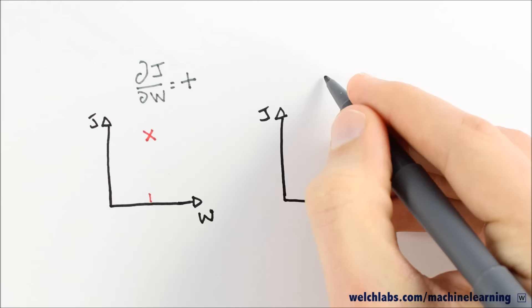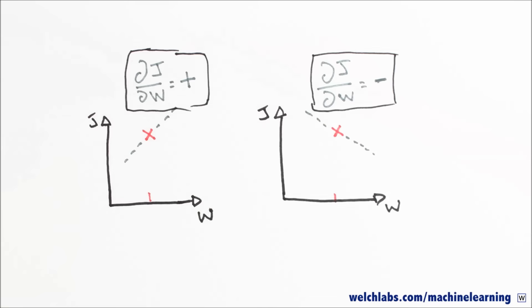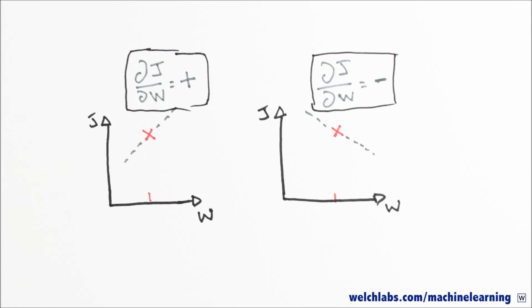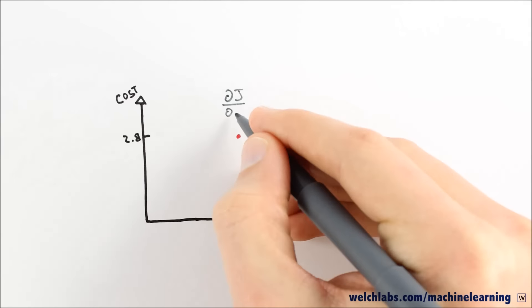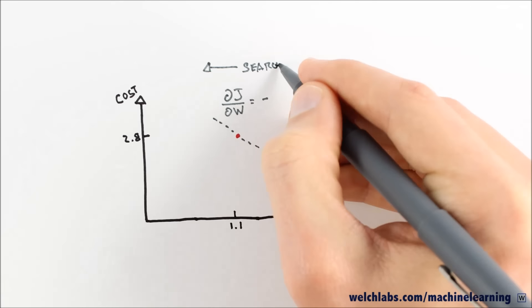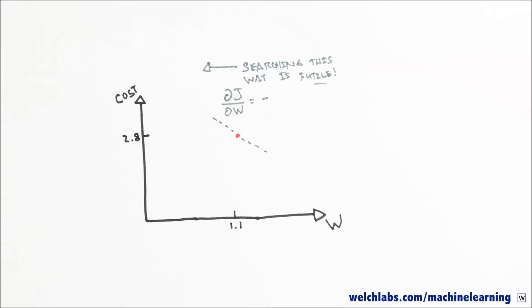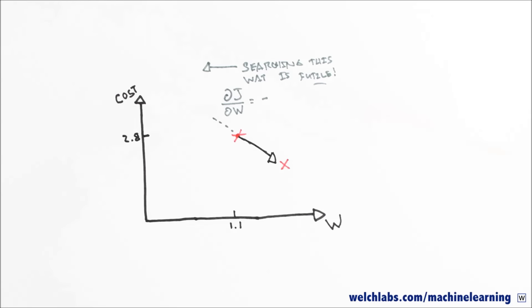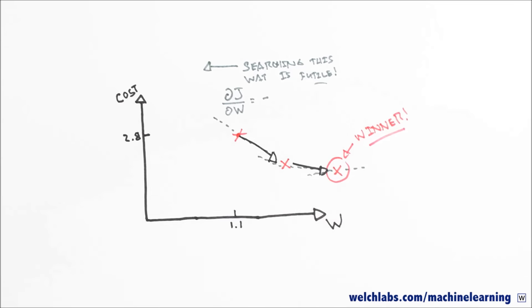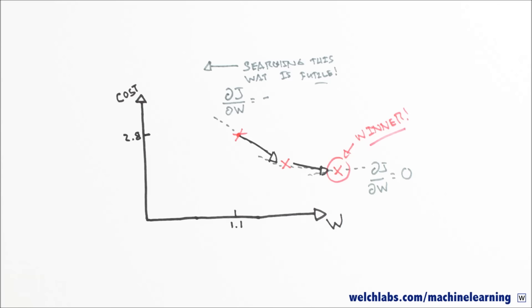If djdw is positive, then the cost function is going uphill. If djdw is negative, then the cost function is going downhill. Now we can really speed things up. Since we know in which direction the cost decreases, we can save all the time that we would have spent searching in the wrong direction. We can save even more computational time by iteratively taking steps downhill and stopping when the costs stop getting smaller. This method is known as gradient descent.